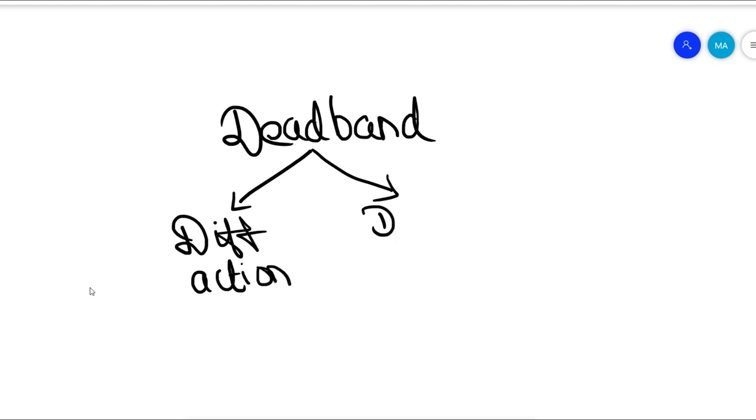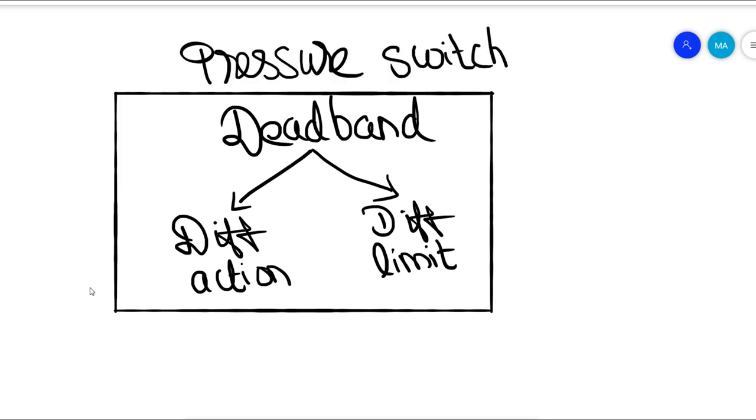People talk about deadband majorly in process situations in process industries. The deadband is also called switch differential action or differential limit. First let's see what is basically a deadband. Let's see the definition of a deadband.